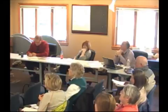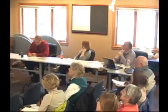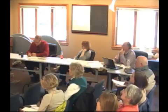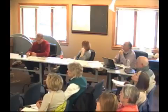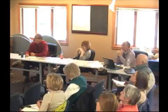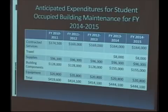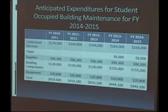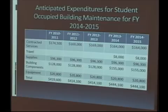Here's the actual budget for the student-occupied building maintenance for the past five years and the graphical view. Building components are the five-year maintenance plan items — inside remodeling of the high school, the SRO office relocation, cutting the doorway in. Travel budget covers maintenance crew out-of-district travel, out-of-district conferences, trainings, or certifications.